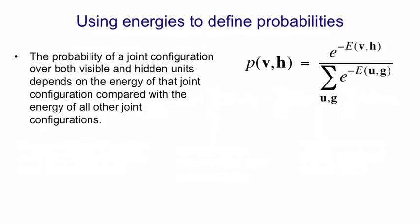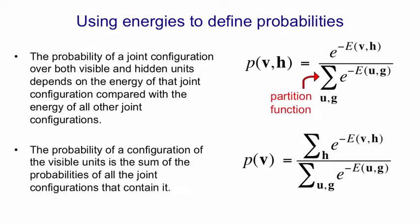To make that an equality, we need to normalize the right-hand side by all possible configurations over the visible and hidden units. And that's what the divisor there is. That's often called the partition function. That's what physicists call it. And notice that it has exponentially many terms. To get the probability of a configuration of the visible units alone, we have to sum over all possible configurations of the hidden units. So P of V is the sum over all possible H's of E to the minus the energy you get with that H, normalized by the partition function.